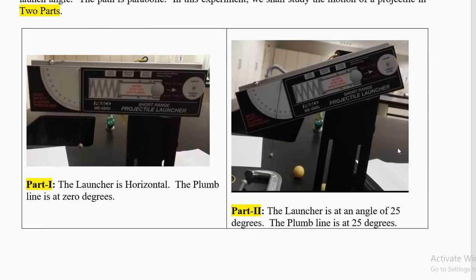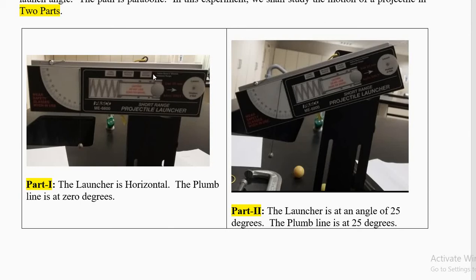In the lab we shall be using a projectile launcher. You can adjust the angle and adjust the speed. It has three notches: low speed, medium speed, and high speed. In today's experiment we shall be sticking to the low speed. The thing which will be launching will be yellow colored plastic balls, smaller than tennis balls, using notch 1 which has the minimum speed.